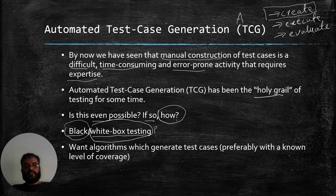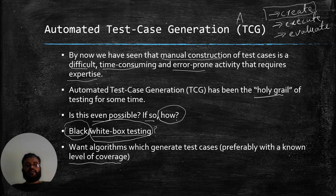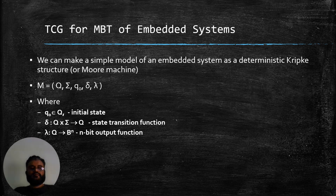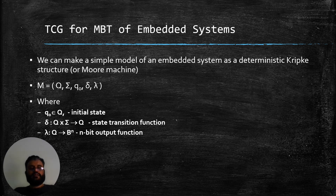A very important topic in the white box testing community is to have some level of coverage identified by the tests. If we are generating test cases automatically, we will definitely want to know what sort of coverage we are achieving with those automatically generated test cases. I discussed earlier that different formulas are available for different model checkers, and I am going to make use of finite state machines or Kripke structures for modeling our systems as input to our model checker for automatic test case generation.